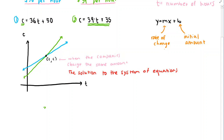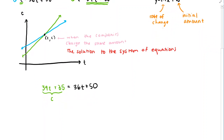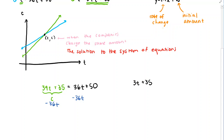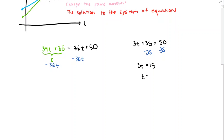Now we solve this one-variable equation. Subtracting 36T from both sides gives 3T + 35 = 50. Subtracting 35 from both sides gives 3T = 15. Dividing both sides by 3, we get T = 5.